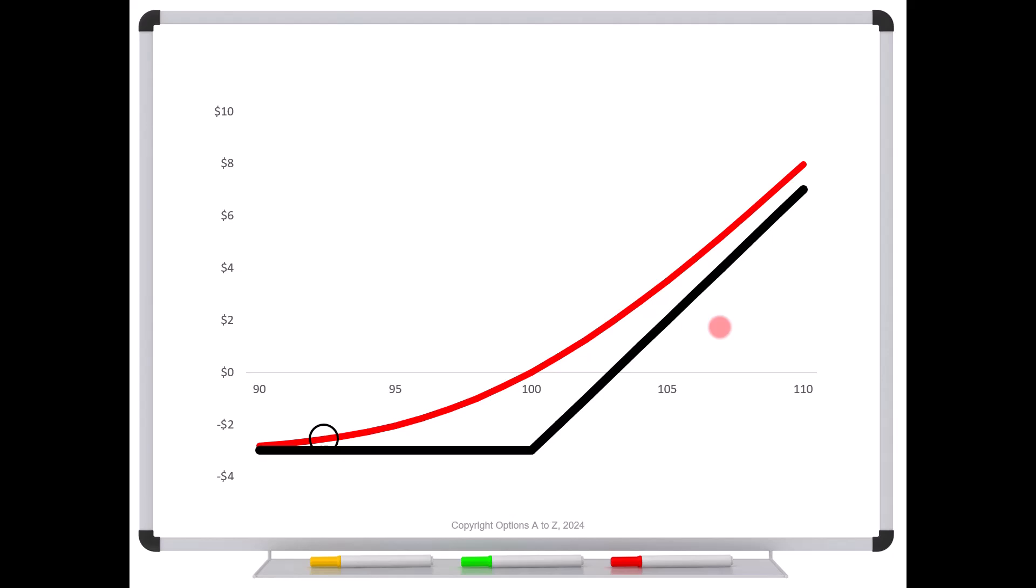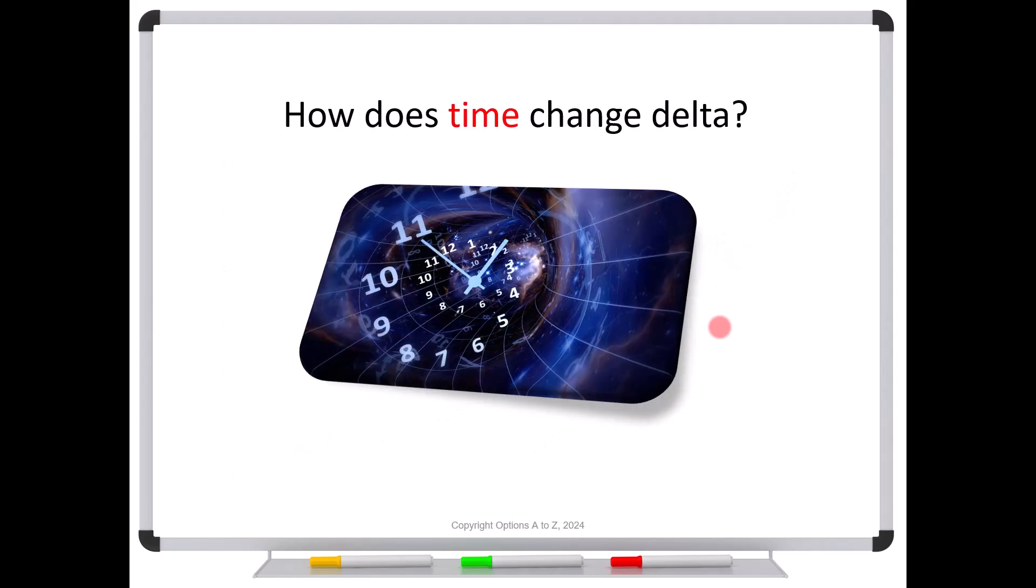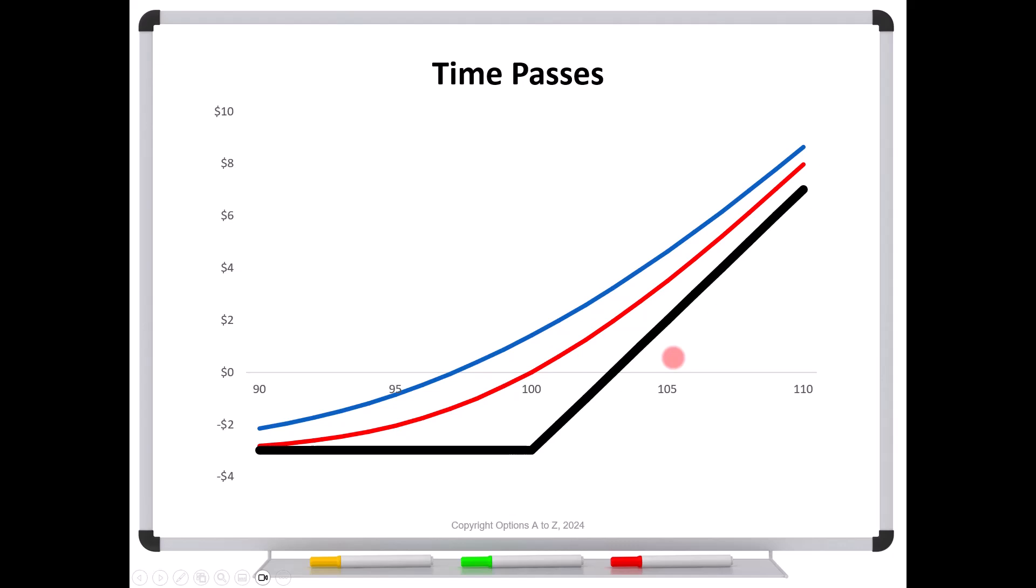Let's now answer the second question. How does time change your delta? Why should your deltas change just because time is passing? Once you understand how to calculate delta, it should be easy to see what happens as time passes. Let's say that we are on the blue line up here, maybe with 30 days and time has gone by. Maybe 15 days later, we're on the red curve. The curve starts moving lower towards the black line as expiration gets closer.